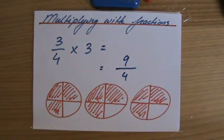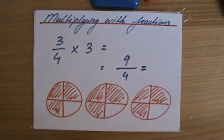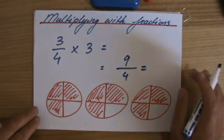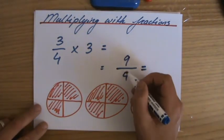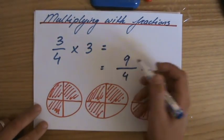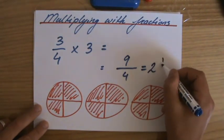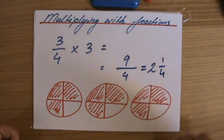3 quarters, 3 over 4 times 3 equals 9 quarters. And if you simplify that, 9 over 4, because as you already saw, that is a top-heavy fraction, an improper fraction, 9 quarters. How many times does 4 fit into 9? That's 2 whole ones, and I have a remainder of 1, so 1 over 4.